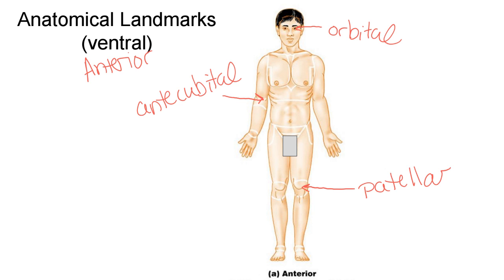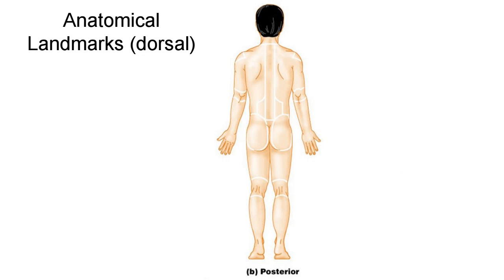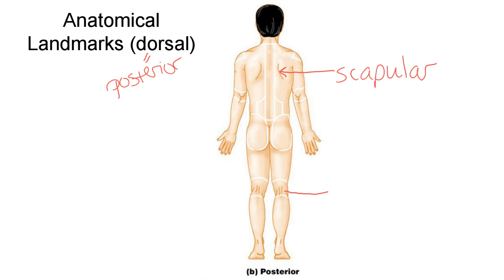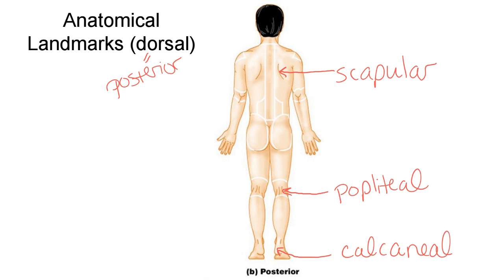On the posterior or dorsal side, you're going to be expected to label certain diagrams as well. For example, the region at your shoulder blade is the scapular region. The back of your knee — as opposed to the front, which was the patellar — is the popliteal region. And down at the back of your heel, that's the calcaneal region.